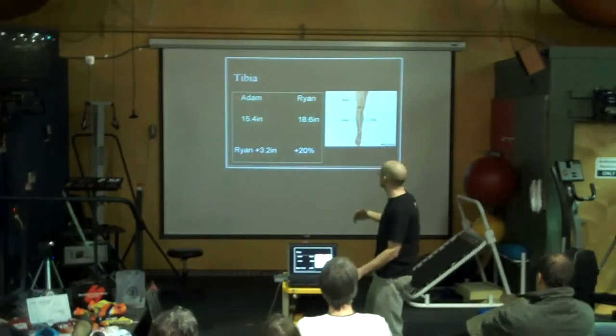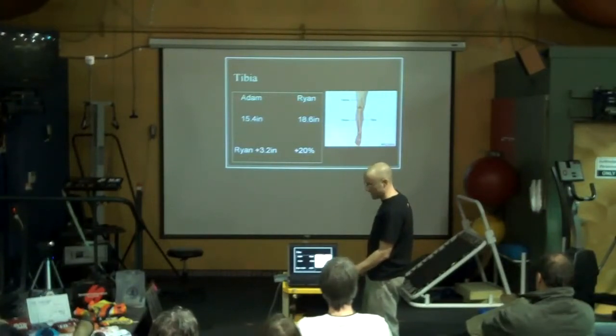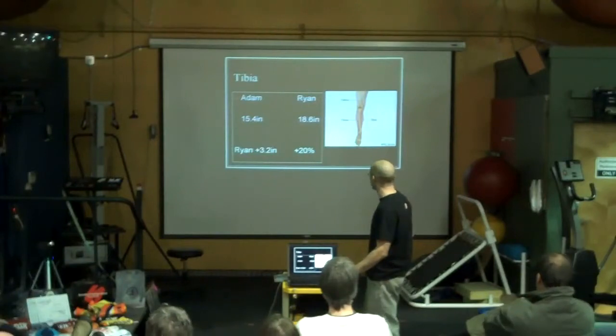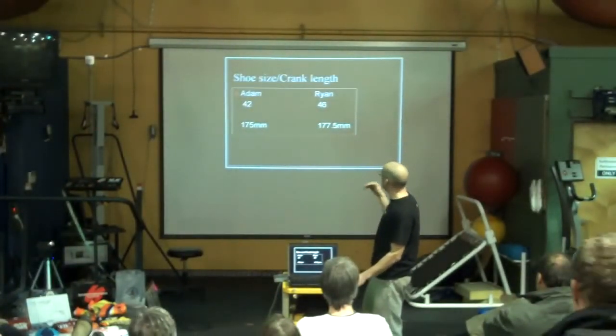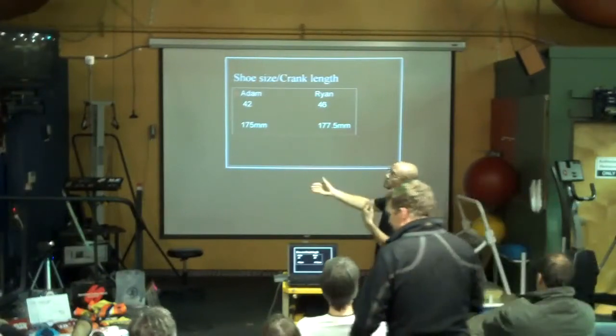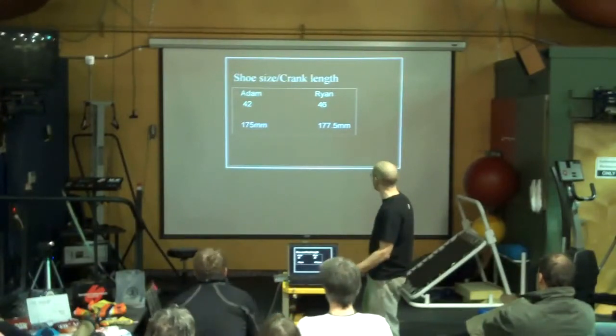Tibia is the lower bone of the leg. Three and a half inches between the two of them, that's still another 20% that Ryan has on Adam's legs. You see the bikes next to each other, you can see where this leg length really shows itself. A little bit bigger foot on Ryan, that's even more length he's going to add to his total kinetic chain of his legs that's attached to the pedal.